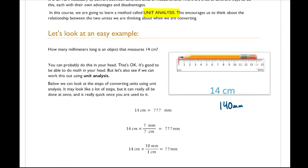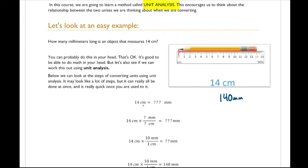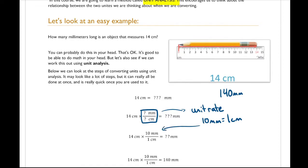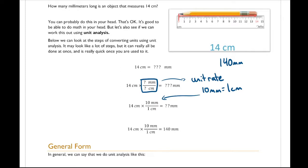We have 14 centimeters and we want to convert to millimeters. We're going to multiply 14 centimeters by a fraction or ratio called a unit rate. A unit rate is basically the amount per one unit — in this case, how many millimeters are in one centimeter. There are 10 millimeters in one centimeter, so that's our unit rate. So 10 millimeters over 1 centimeter replaces that fraction, and 14 times 10 divided by 1 equals 140.